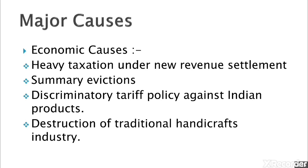The peasantry was never really able to recover from the disabilities imposed by the new and highly unpopular revenue settlement. There was impoverishment because of heavy taxation, and peasants had to resort to loans from money lenders at very high rates. This high debt burden led to summary evictions due to non-payment of taxes. The older system of zamindari was also forced to disintegrate. The British rule also meant misery to artisans and handicraft people, as annexation of Indian states cut off their major source of patronage.